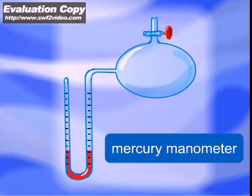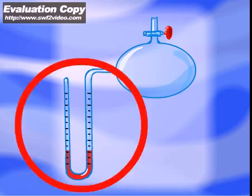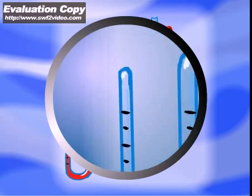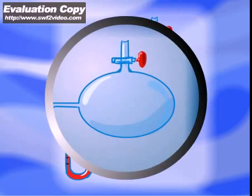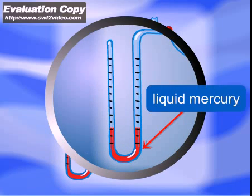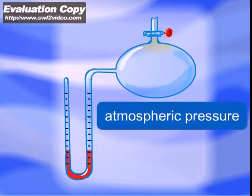Gas pressure is usually measured by manometers. The simplest manometer consists of a graduated U-shaped glass tube closed at one end and connected to the gas container at the other end. The tube is filled with liquid mercury.